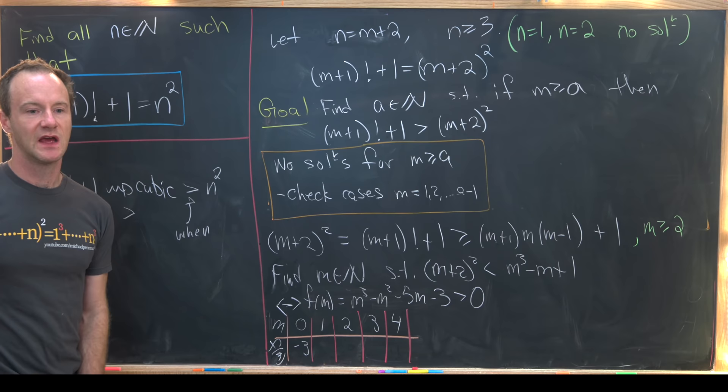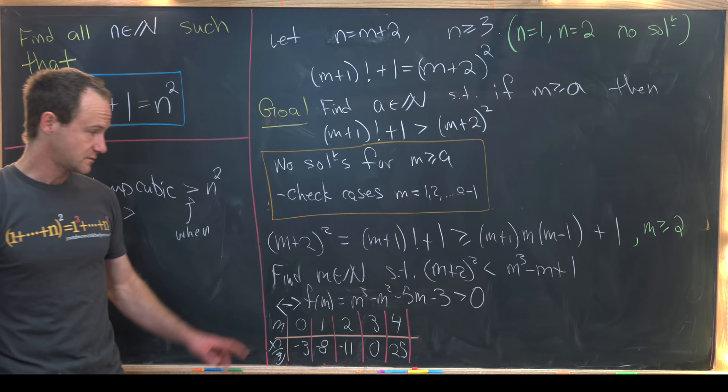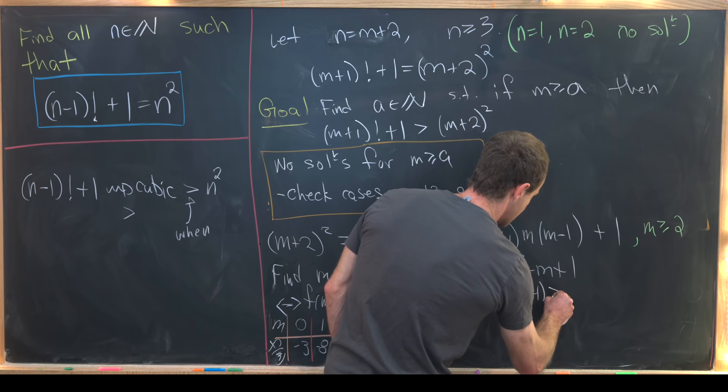So if we plug 0 in there we'll get negative 3. If we plug 1 in there we'll get negative 8. 2 will give us negative 11. 3 will give us 0 which is pretty interesting. And then 4 gives us the number 25.